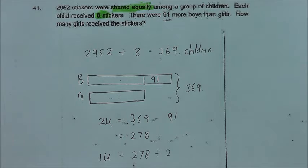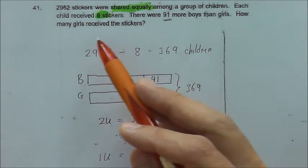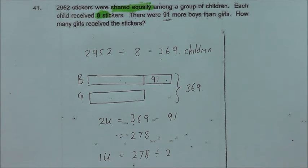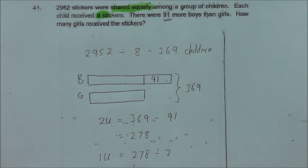So basically that's the answer. To stretch the question a little bit, if the question asks you for the number of boys, then you will just take 1 unit plus 91. Just take note how to draw this model, because once you can draw this model, you should be able to find out the number of boys and girls easily.